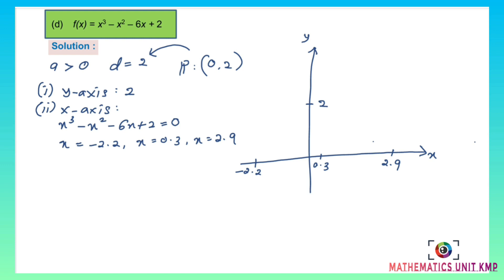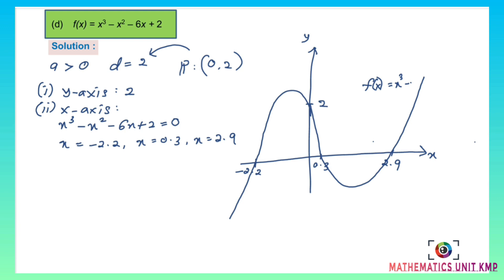When the value of a is greater than 0, the graph at the right is concave up and at the left is concave down. Label the graph f(x) equals x³ minus x² minus 6x plus 2.